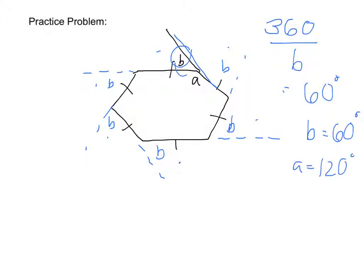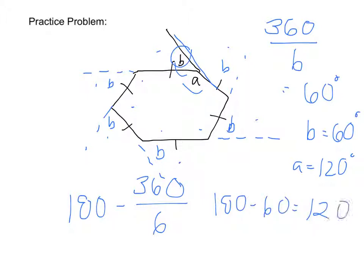then we could use the formulas we just learned. For example, we could say that 180 minus 360 over 6, since there are six angles here, is going to be the measure of each interior angle in a regular polygon. So that's what a is. Then we get 180 minus 60, which of course comes out to the same thing, 120.